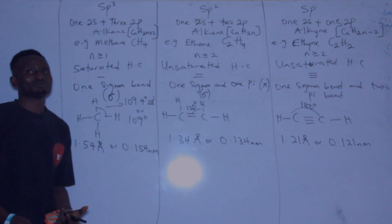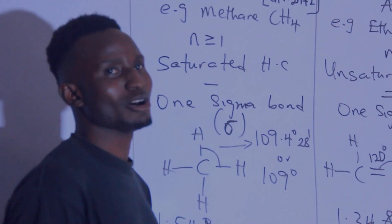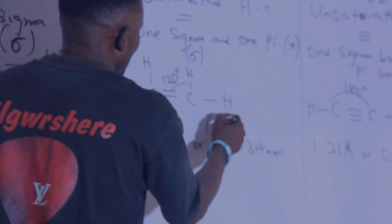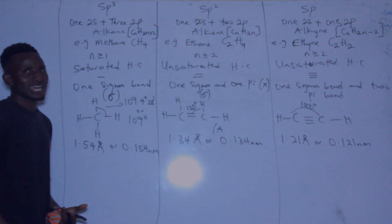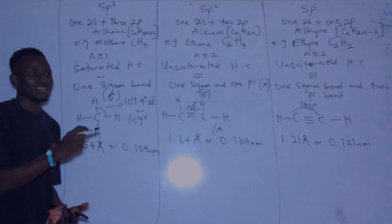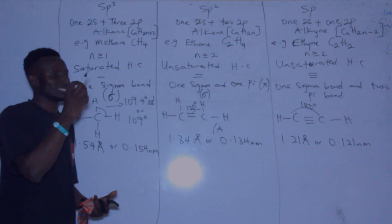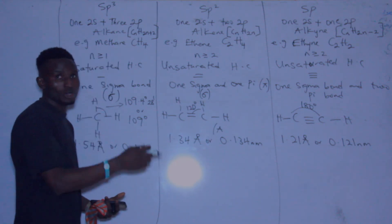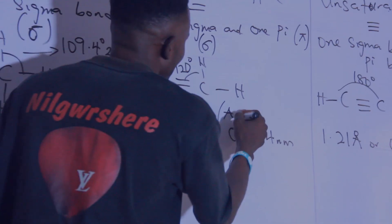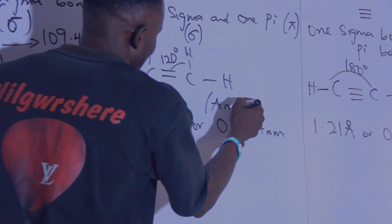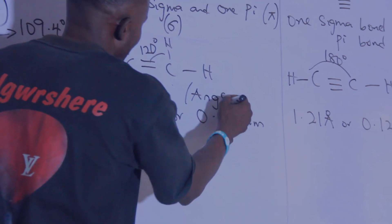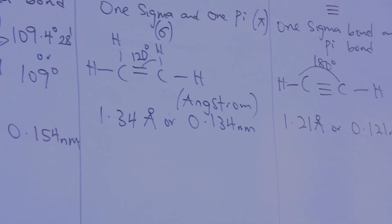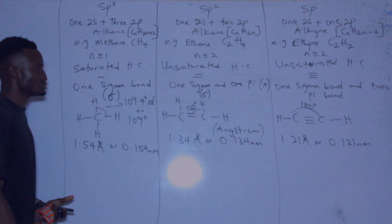Some may ask about the spelling of Ångström. The symbol is 'A' with a small circle at the top. The spelling is A-N-G-S-T-R-O-M: Ångström.